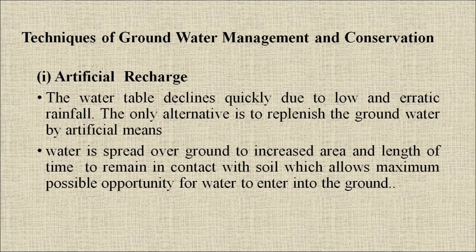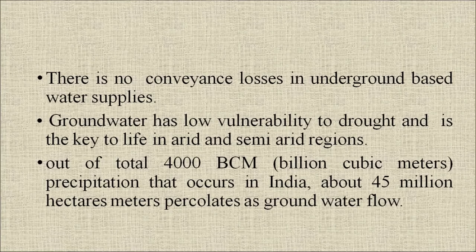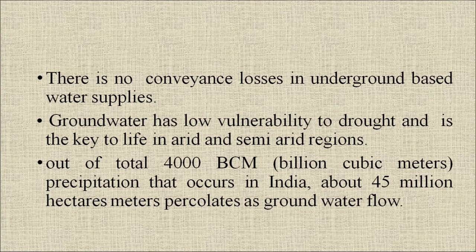Techniques of groundwater management and conservation: first is artificial recharge. The water table declines quickly due to low and erratic rainfall; the only alternative is to replenish the groundwater by artificial means. Water is spread over ground to increase the area and length of time it remains in contact with soil, allowing maximum opportunity for water to enter the ground. Contour farming is an example of such a harvesting technique involving water and moisture control at a simple level; it often consists of rows of rocks placed along the contour of steps.